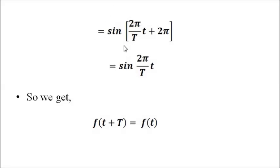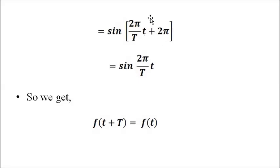We know that for any trigonometric function, adding 2π is the same as adding 0 — because 2π radians equals 360 degrees, meaning we return to the same position where we started in the coordinate system. So sin(2π/T · t + 2π) equals sin(2π/T · t). Therefore f(t + T) = f(t), confirming that after one time period has passed, we get the same function. The sine function is thus a periodic function.